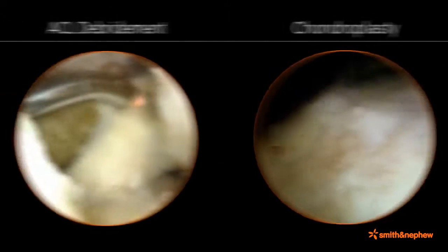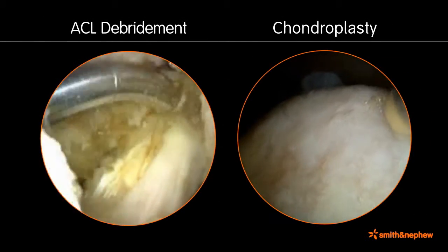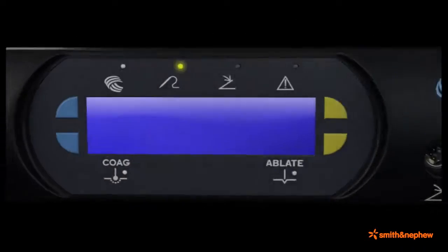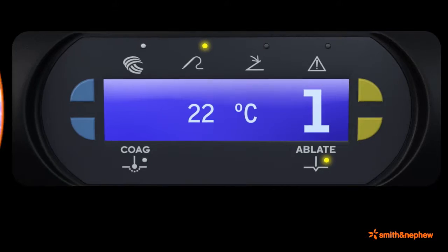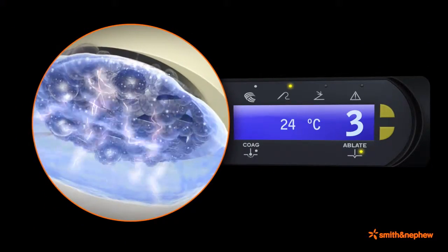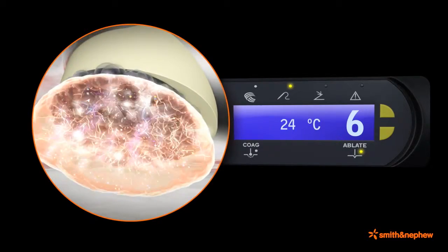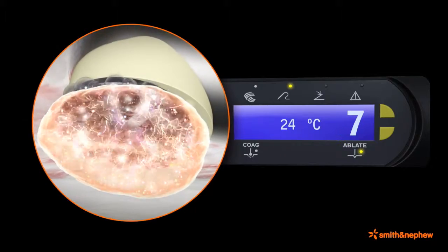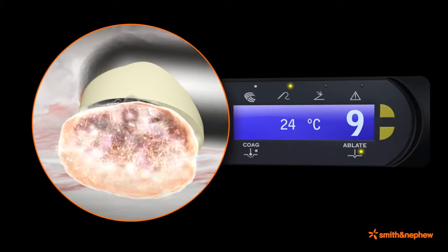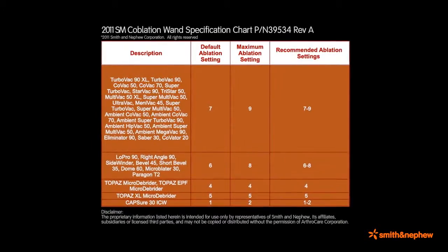Smith and Nephew coablation products are designed to operate in ablation and coagulation modes, which result in different tissue effects. As the controller settings increase from 1 to 9 in the ablation mode, the performance of the wands transitions from a thermal effect to an ablative effect through the creation and intensity of plasma. Depending on the wand design, the transition to plasma usually occurs between controller settings 2 to 7. Optimal use occurs at the default setting and above.